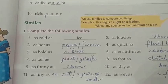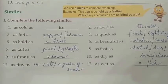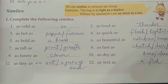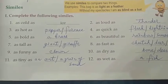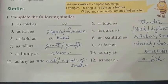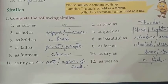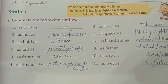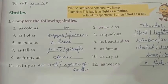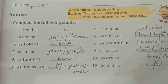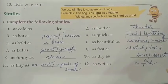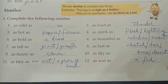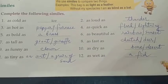Number one: as cold as ice. Ice jaisi thandi. Number two: as loud as thunder. Number three: as hot as pepper, ya aap likh sakte ho furnace. Number four: as quick as flesh, ya as quick as lightning. Number five: as bold as brass. Number six: as beautiful as a rainbow, ya sunset.